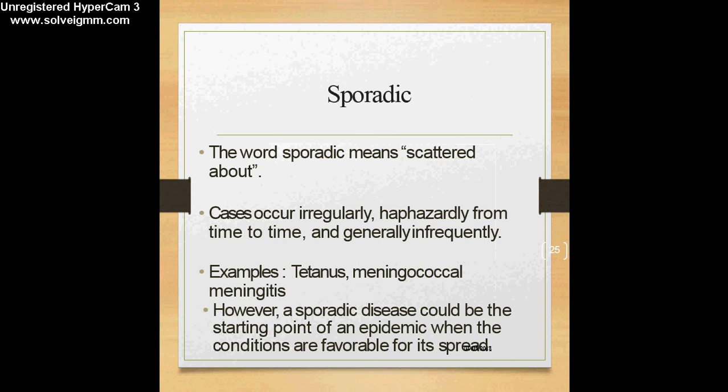There is one more term which students of epidemiology need to know: sporadic. The word sporadic means scattered about — there is no particular time or reason why cases will occur; there will be a haphazard occurrence of cases from time to time, and this will be infrequent. Examples of sporadic disease spread are tetanus and meningococcal meningitis.